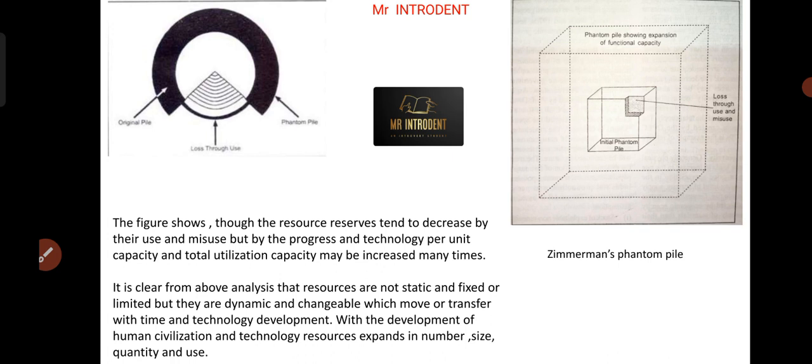The actual theory is that though the resource reserves tend to decrease by their use and misuse, by the progress in technology per unit capacity and total utilization capacity may be increased many times. Resources, when being used for a longer period of time, get reduced. Their quantity, already static in nature, will be reducing with time. But what happens is that along with time, when human brains develop more, they find more new technologies by which the productive efficiency or productive capacity increases. So the resources that are now little are still used for more purpose—for producing more energy, doing more works, satisfying more utility.